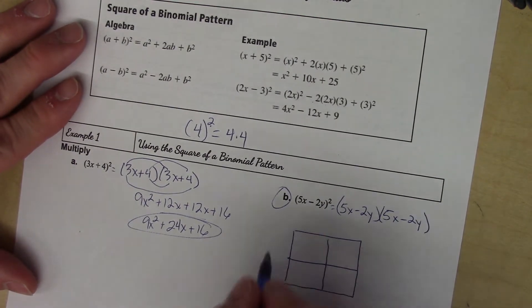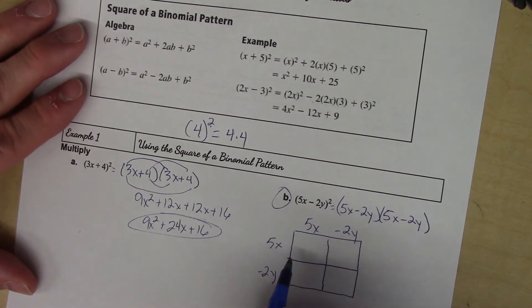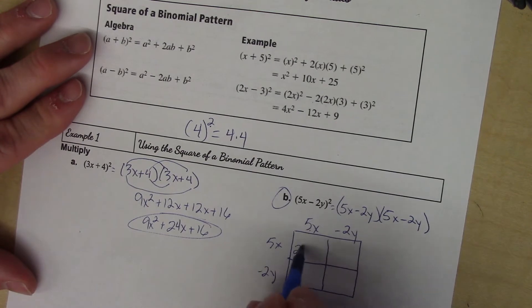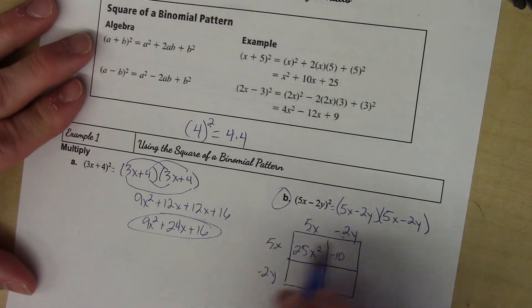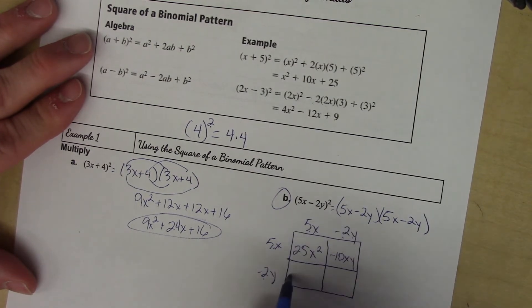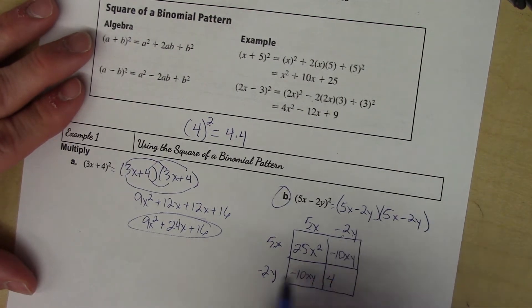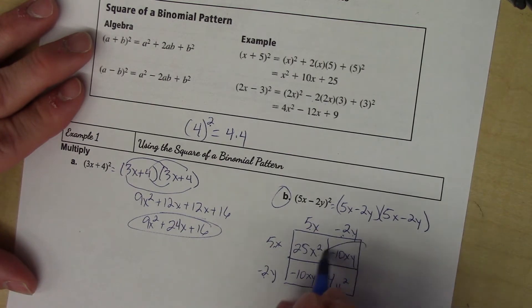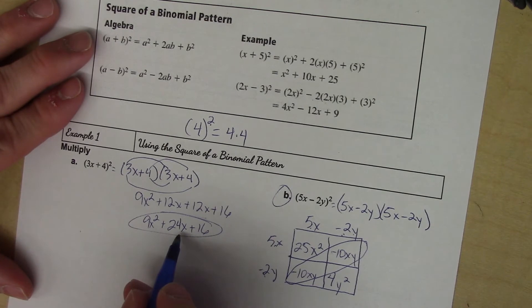So 5x minus 2y, 5x minus 2y, and I just start multiplying terms. 5x times 5x is 25x². 5x times -2y is -10xy. 5x times -2y is again -10xy. And -2 times -2 is 4, y times y is y², so it's +4y².